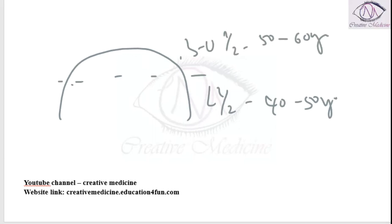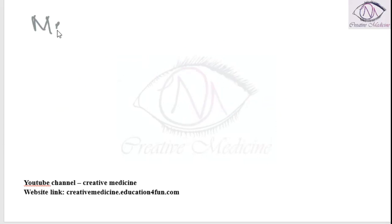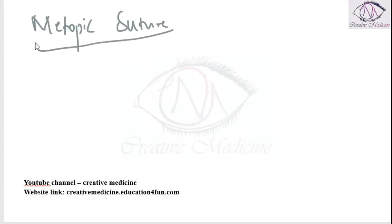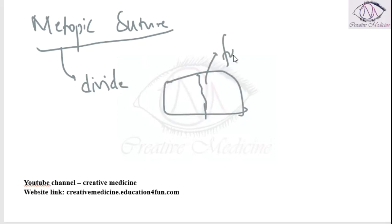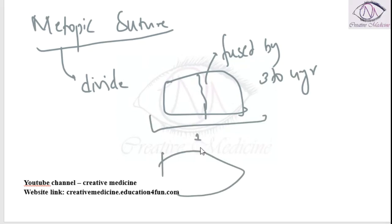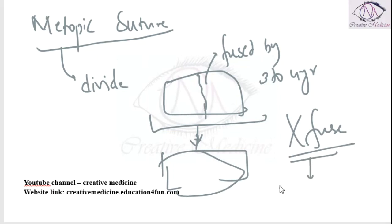The metopic suture, also known as metopism, divides the frontal bone into two parts. It normally fuses by 3 to 4 years after birth, after which the frontal bone becomes a single entity. In some individuals, the metopic suture does not fuse; this is called metopism, which is seen in 5 to 10% of people.